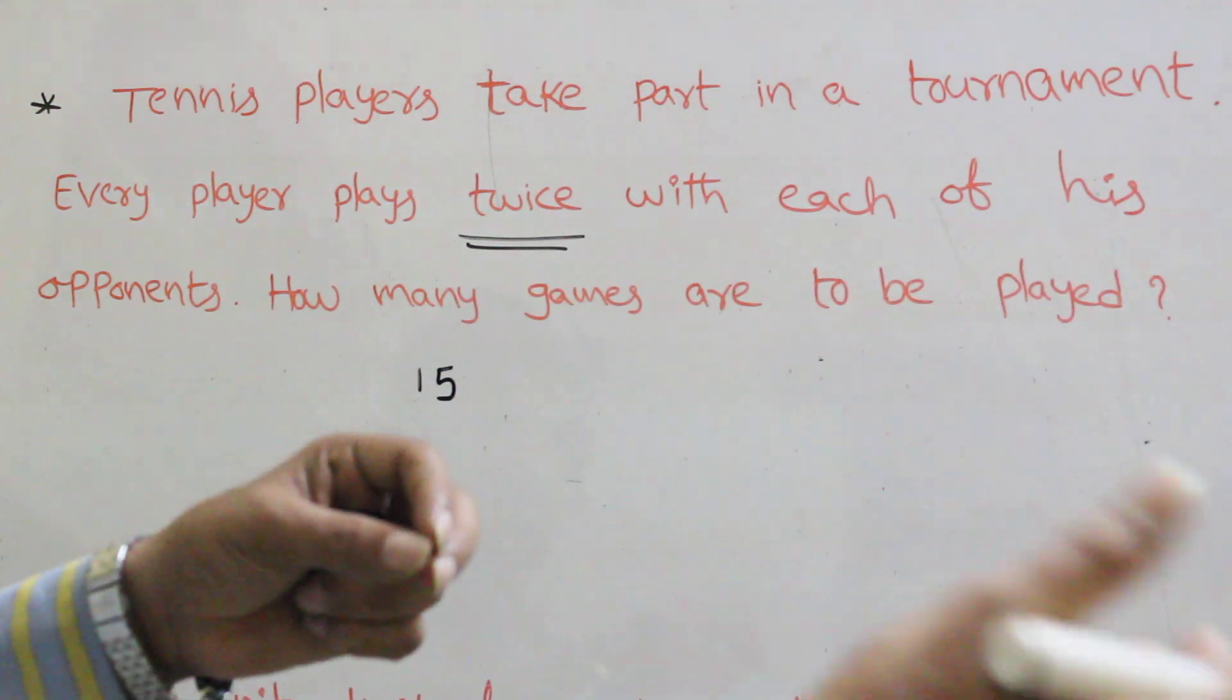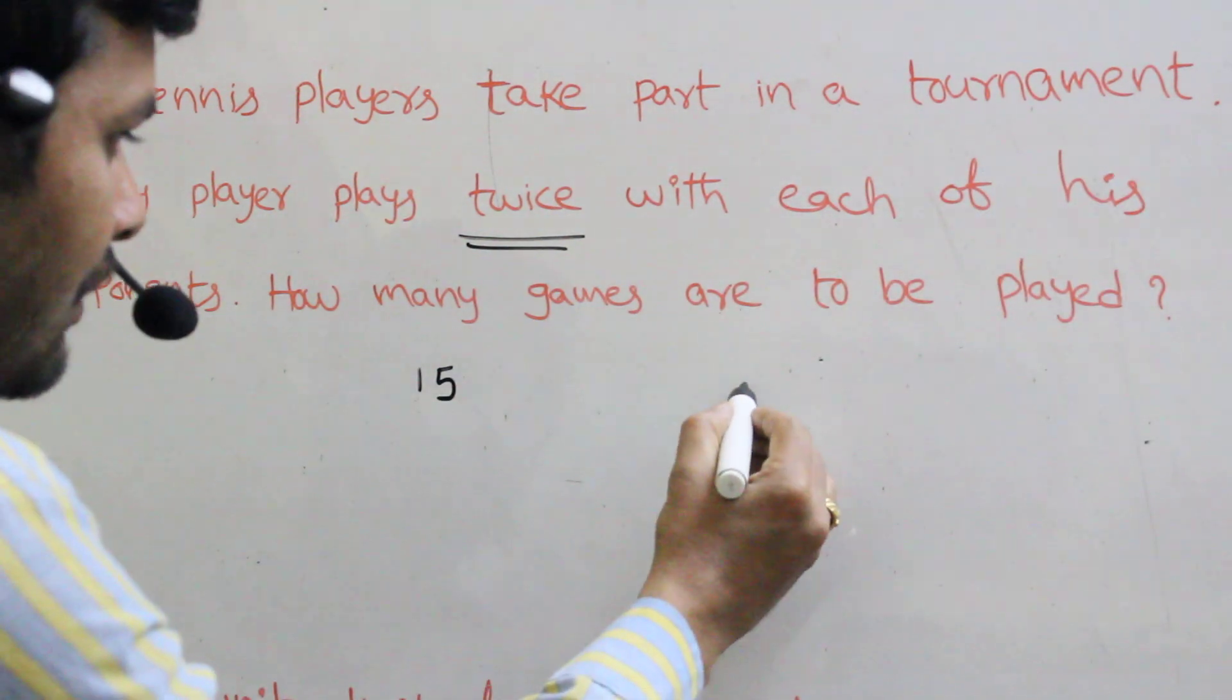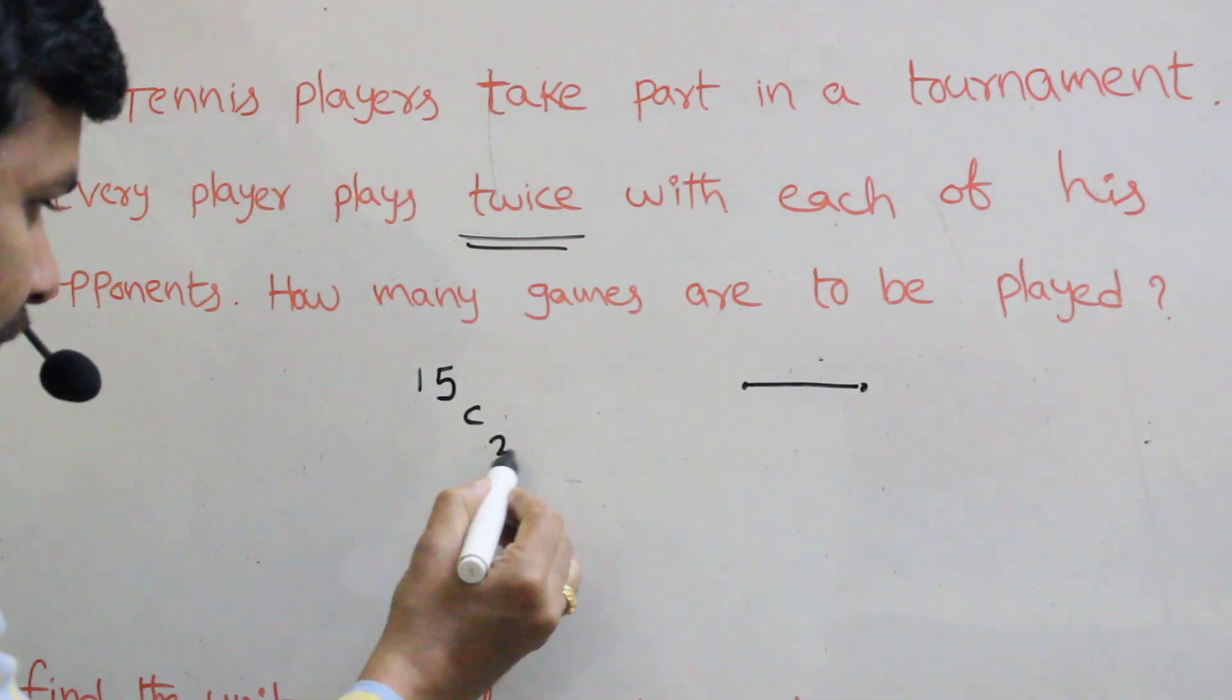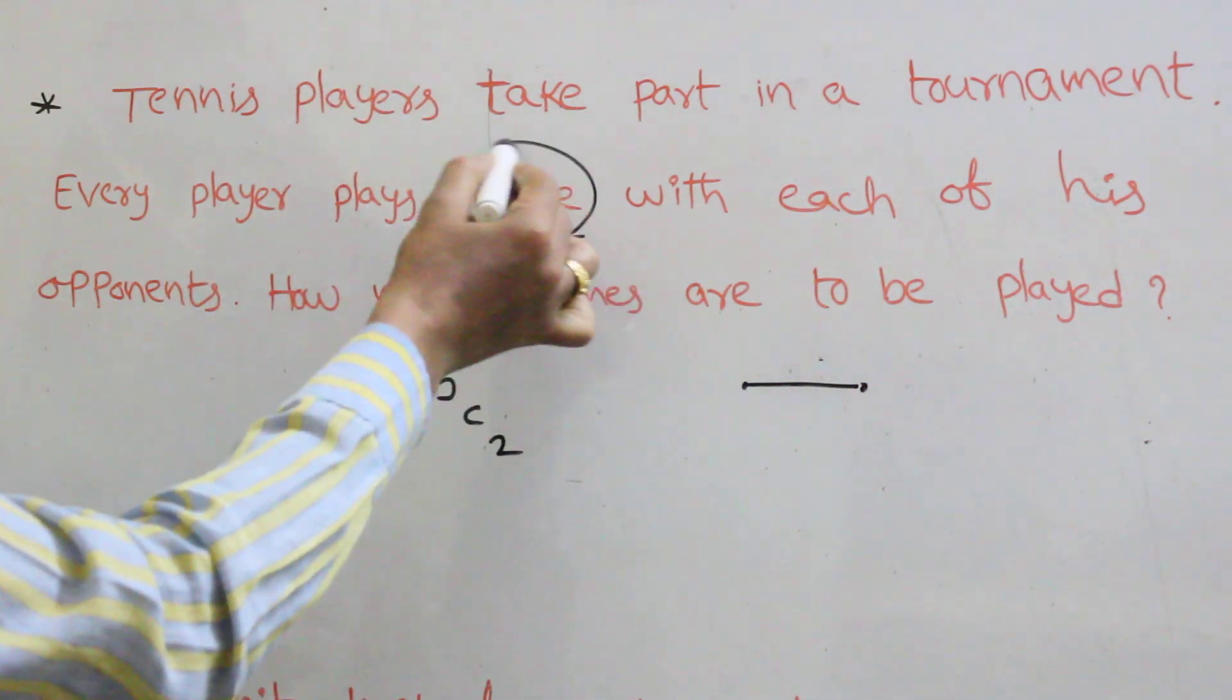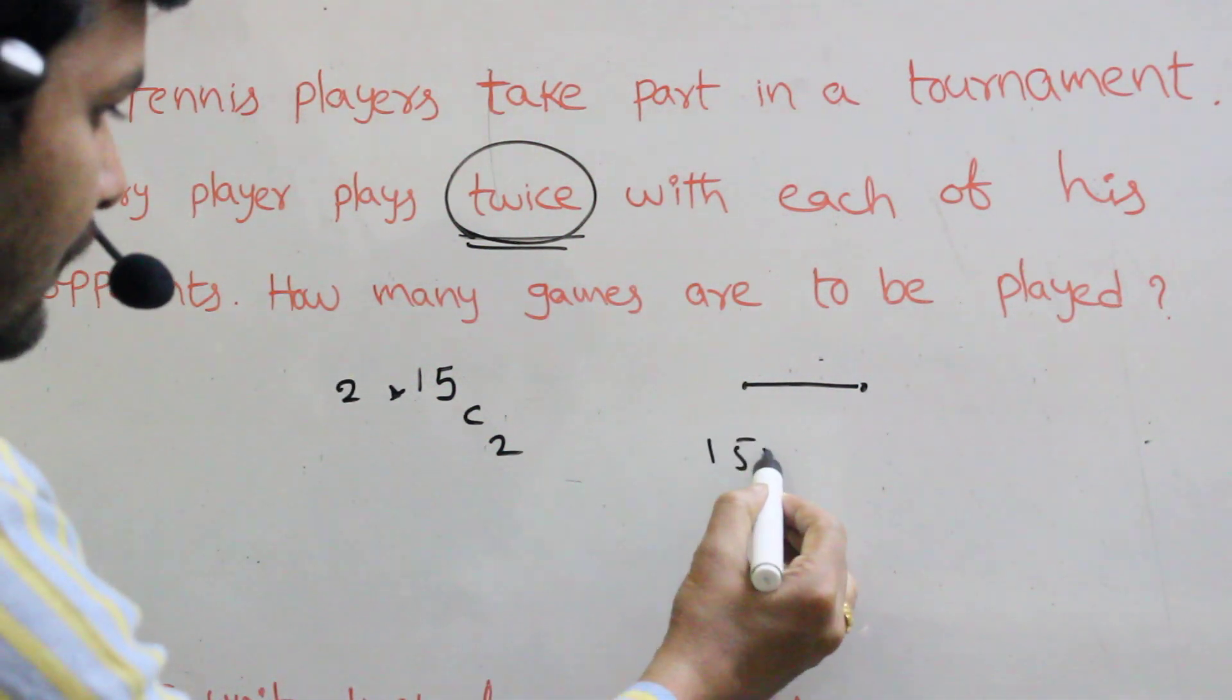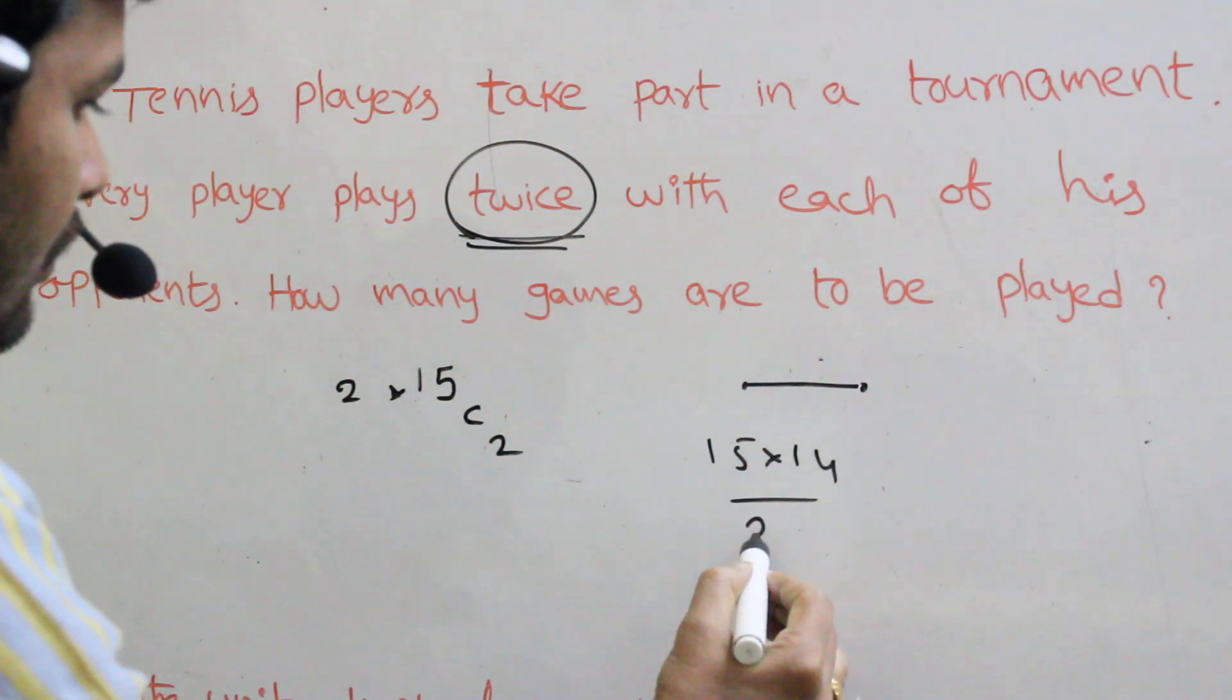But every opponent, one player versus another player opponent. How many combinations are there? Fifteen C2 combinations. But in this one, twice players. Twice means into two. Fifteen C2, do you know?